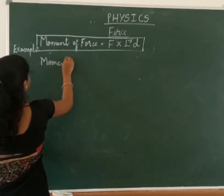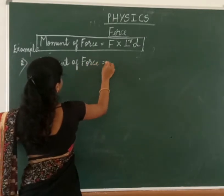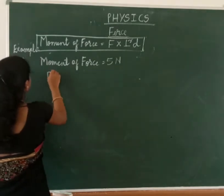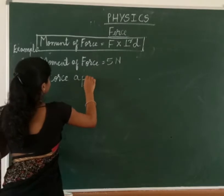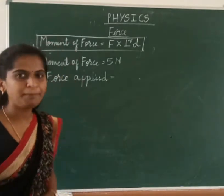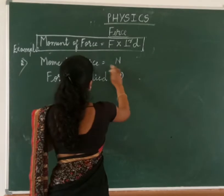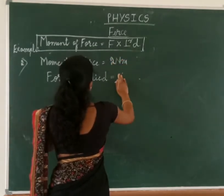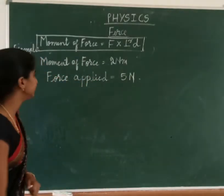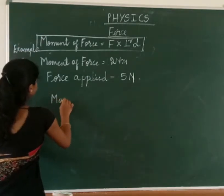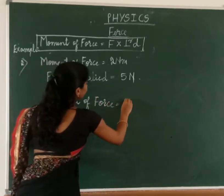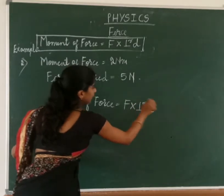Example 2: The moment of force of 5 Newton about a point P is 2 Newton meter. Calculate the distance of the point of application of force from point P. Here, moment of force is 2 Newton meter, force applied is 5 Newton, and we are asked to find the perpendicular distance. The formula is: moment of force equals force into perpendicular distance.